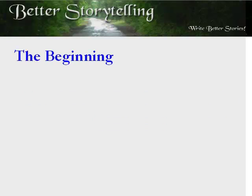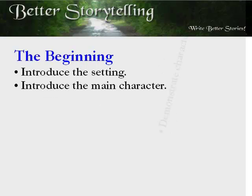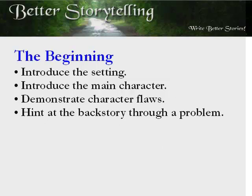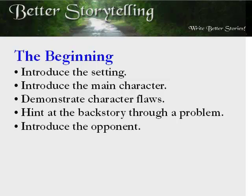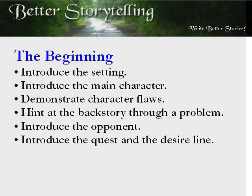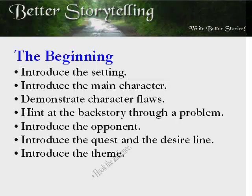The beginning. When a story begins, several things must occur. A writer must introduce the setting, introduce the main character, demonstrate character flaws, hint at the hero's backstory through a problem, introduce the opponent, introduce the quest and the desire line, introduce the theme, and hook the audience. With so many things going on, it can be difficult to do everything correctly without breaking the story.